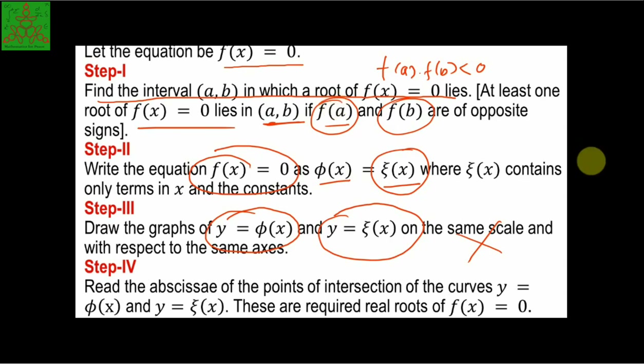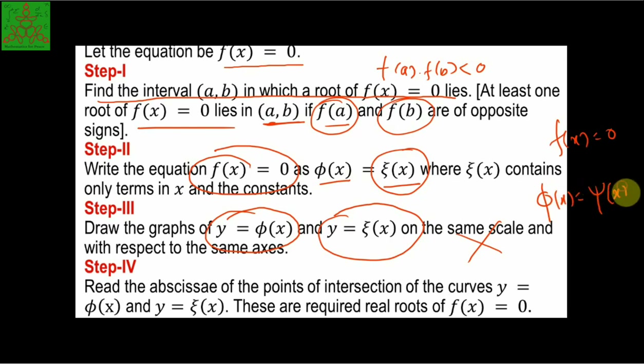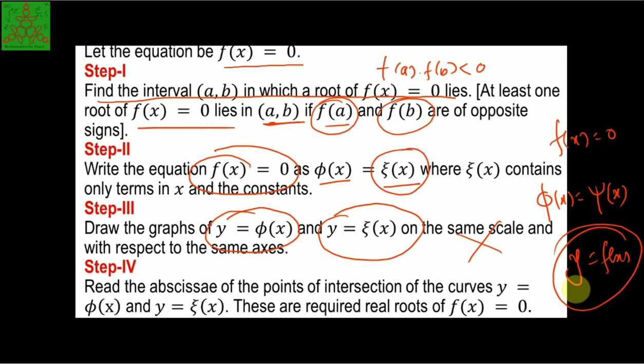In the case where f(x) = 0 cannot be separated into the form φ(x) = ξ(x), we simply plot the graph of y = f(x) directly. Wherever this graph touches or intersects the x-axis, that point of intersection is the solution, or root, of the given equation.